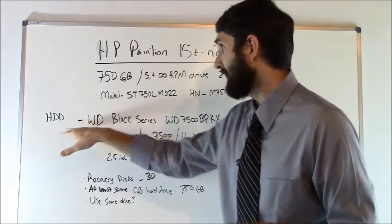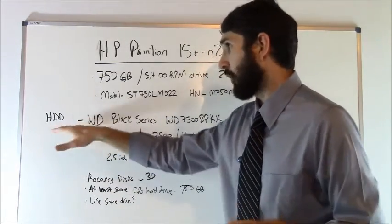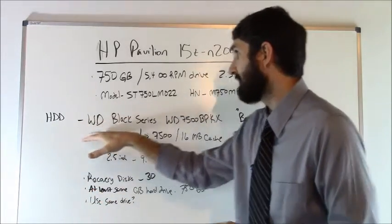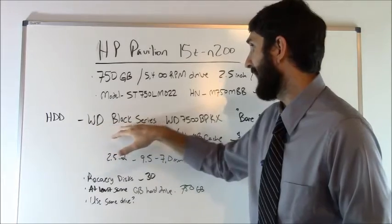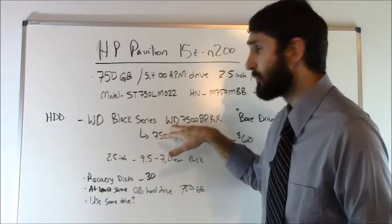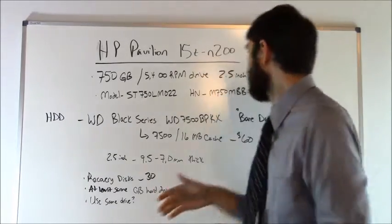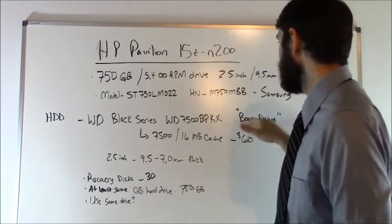And what I ultimately went with, I went with just a regular hard disk drive. It wasn't an SSD or anything, just a regular hard disk drive. It was a Western Digital Black Series model number WD7500BPKX, and that cost me 60 bucks. It's a bare drive.